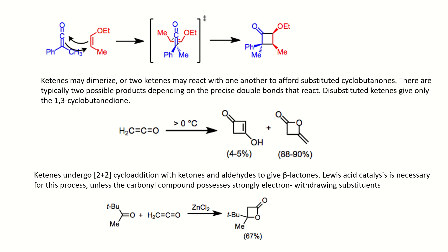Another property of ketenes is that they can undergo 2+2 cycloaddition with ketones and aldehydes to give beta-lactones. Usually a Lewis acid catalyst is required. If the carbonyl compound possesses strongly electron-withdrawing substituents, then acid catalysis is not needed, but normally a Lewis acid catalyst is required to produce the final beta-lactone product.